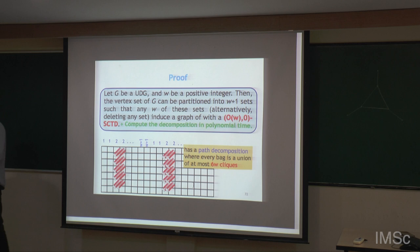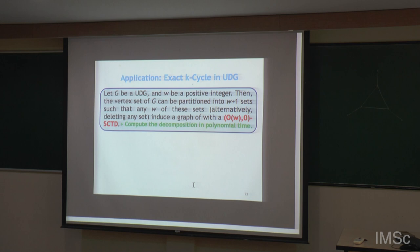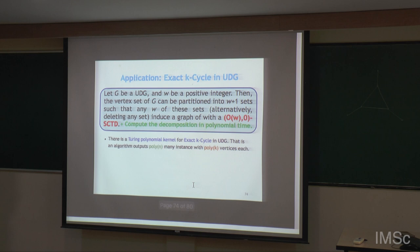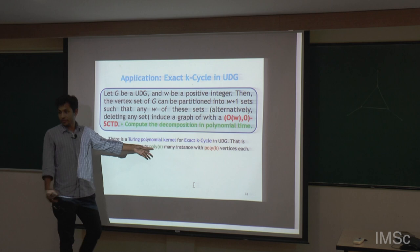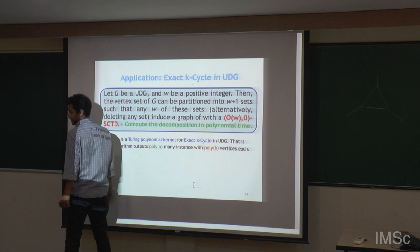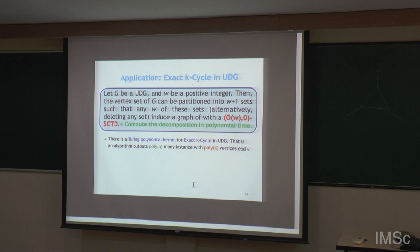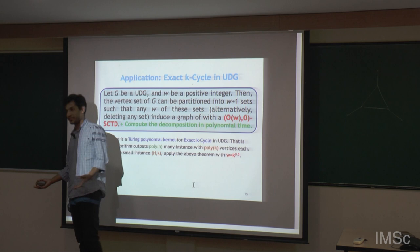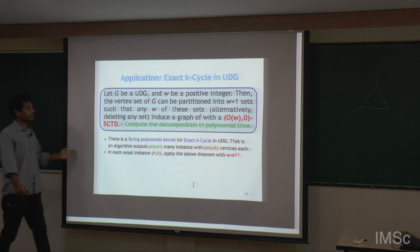The normal decomposition theorem is not possible for unit disk graphs, but we can use this structured version to solve exact K-cycle in sub-exponential time. There is a Turing polynomial kernel for exact K-cycle: an algorithm that outputs poly(n) many instances of exact K-cycle in unit disk graph, each of size poly(K), such that the original instance is YES if and only if one of these smaller instances is YES.